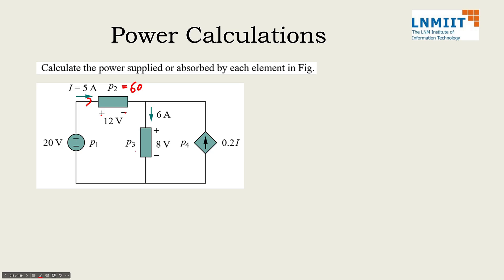Now if I ask you what is the value of P3, then 6 ampere is entering from positive, so P3 will be plus 48. Now if I ask you what is P1, here you can see that the current of 5 ampere is entering from minus, so this will be minus 100. This is how we can calculate the powers.